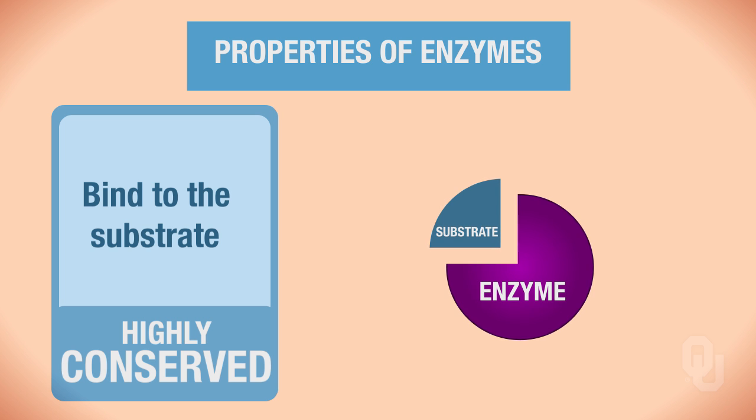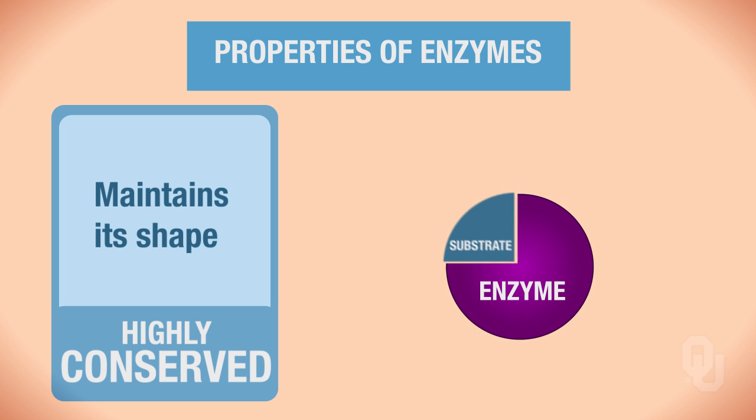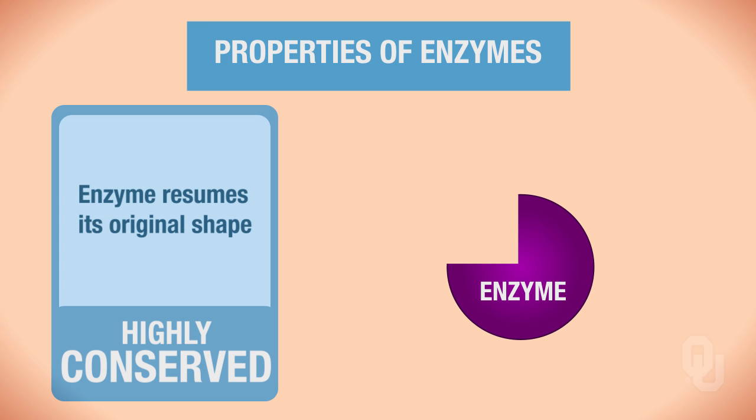But what do I mean by a highly conserved enzyme? When this reaction is over with, the enzyme maintains its shape. And that's what we mean by highly conserved enzymes. So after the reaction, the enzyme will release its product, the substrate gets converted to a product, the product gets released. The enzyme resumes its original shape, so it's retaining its original chemical properties, its shape, and its reactivity. So enzymes are highly conserved.